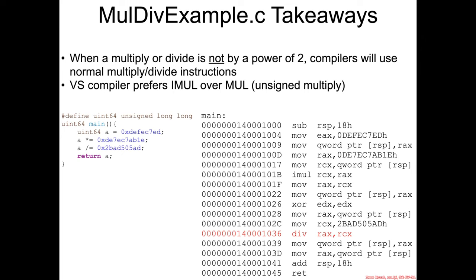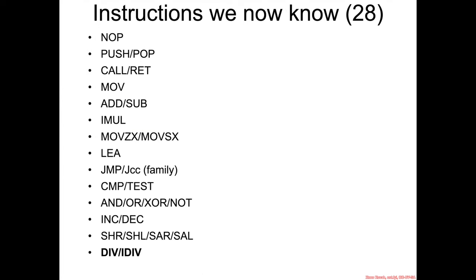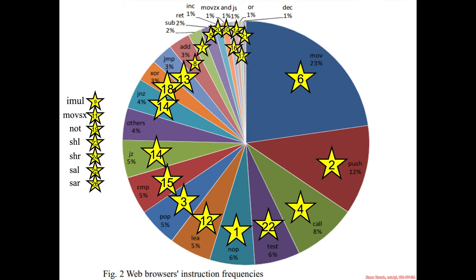The takeaways from mul.div.example is that when it's a multiply or divide that is not a power of two, the compiler will go ahead and use multiply and divide instructions. And as before, Visual Studio really prefers iMul over mul, the unsigned multiply, even when you're dealing with unsigned operands. Two new assembly instructions to the pile: div and iDiv.